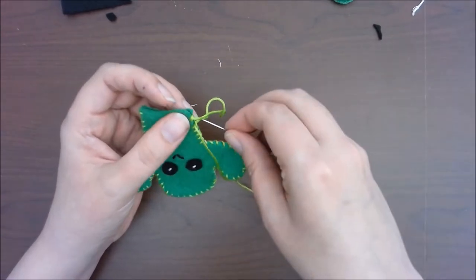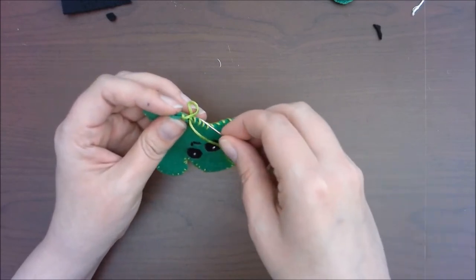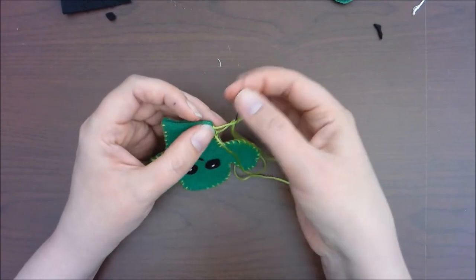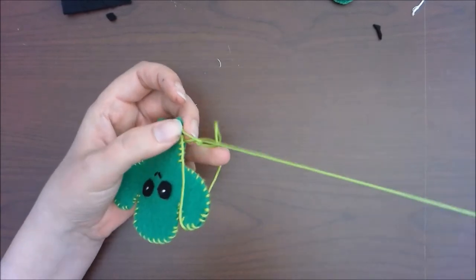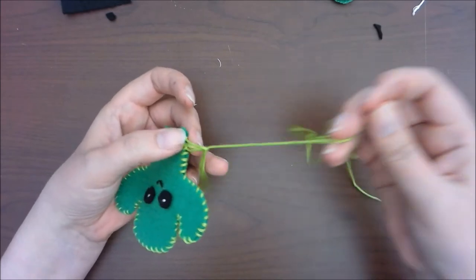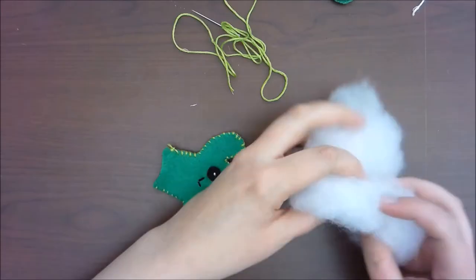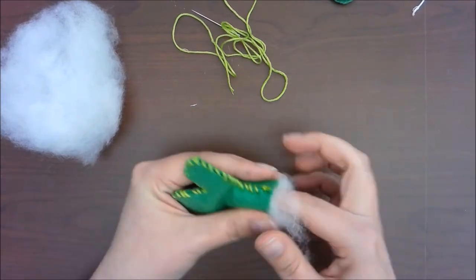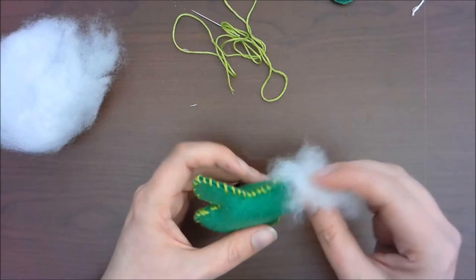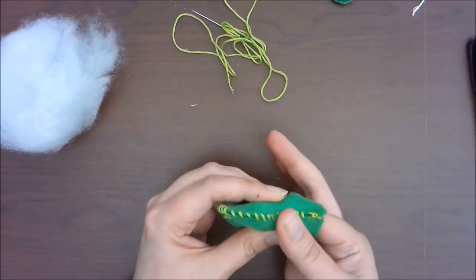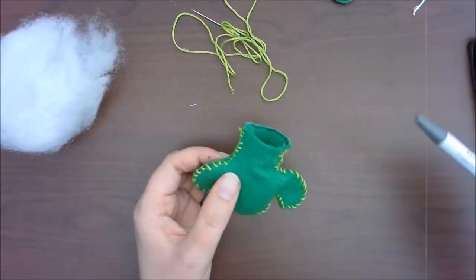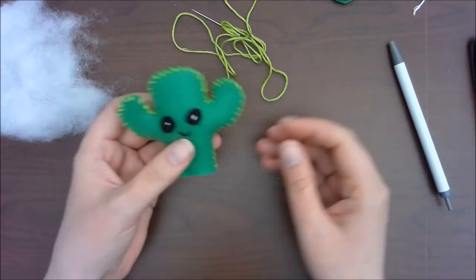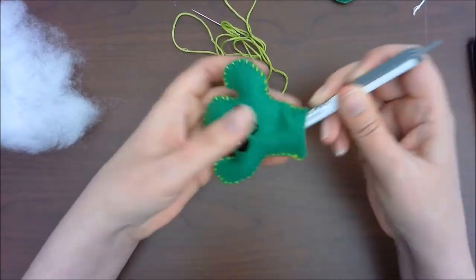So I am doing two tie-offs just in case. And then from here we're going to do our polyfill and fill up our little cactus guy. So go out and grab your polyfill and you can use your finger to kind of just push it all in and get into the little crevices and arms. And sometimes using a pen or pencil is also really helpful to do that. And once it's filled to your liking, we'll move on to the next step.